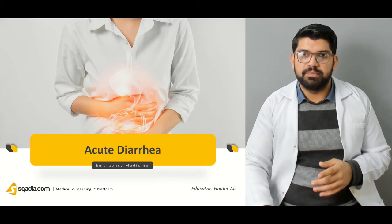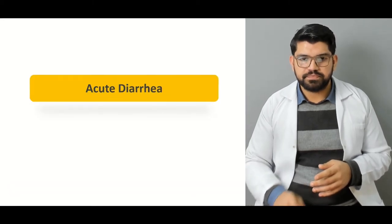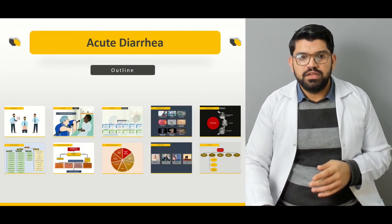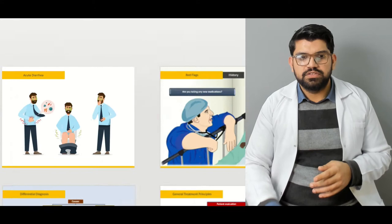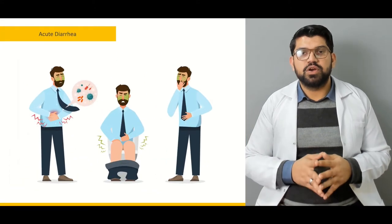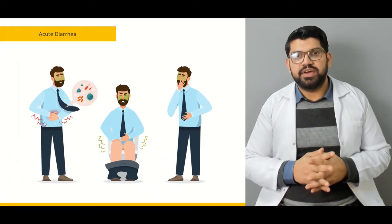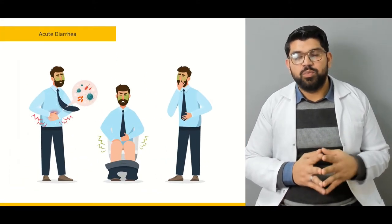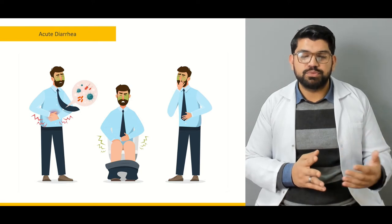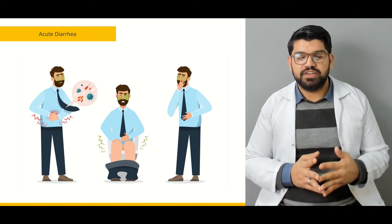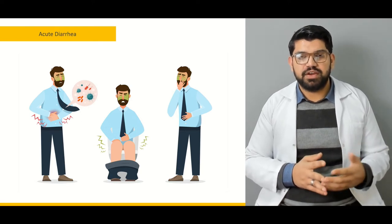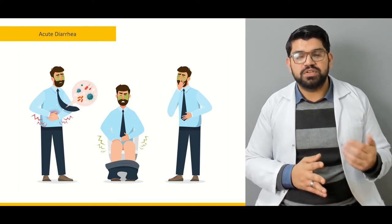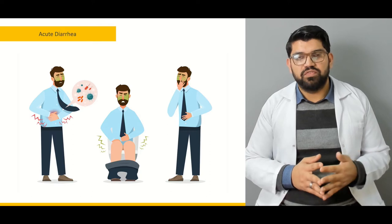Let's go through the timeline. First we will talk about what is acute diarrhea, how do you define diarrhea, what are the different types of diarrhea — for example secretory diarrhea, osmotic diarrhea — and what are the causes of diarrhea.